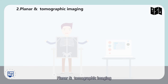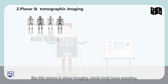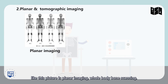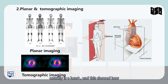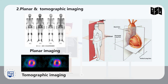The second classification is planar and tomographic imaging. This picture shows planar whole body bone scanning, and the lower part is a tomographic imaging — actually about the heart. This shows how the tomographic imaging is formed, like different sections.